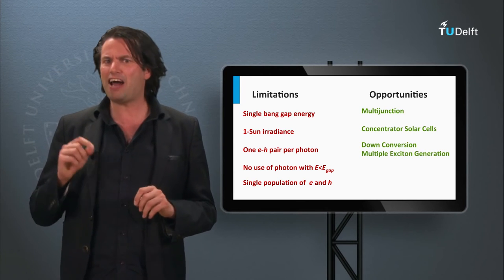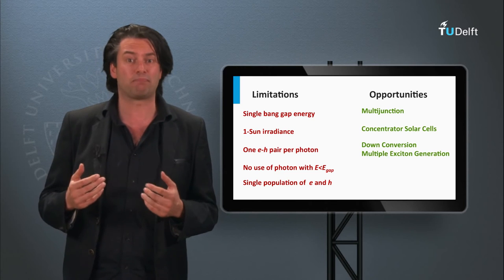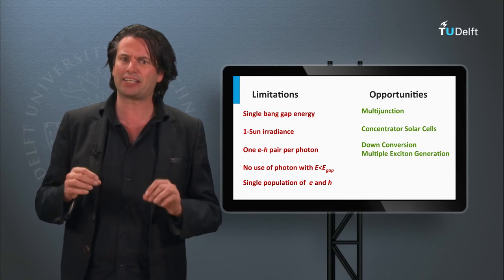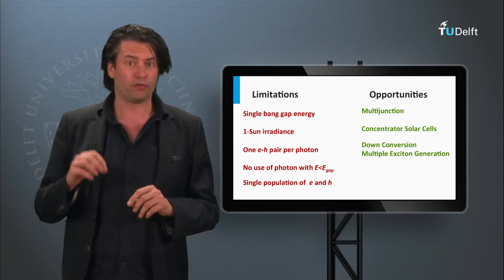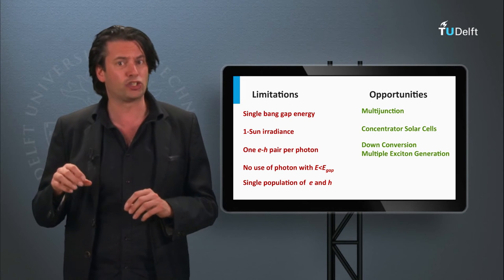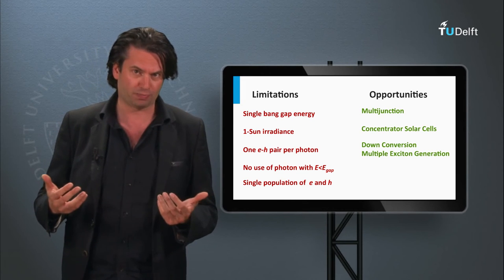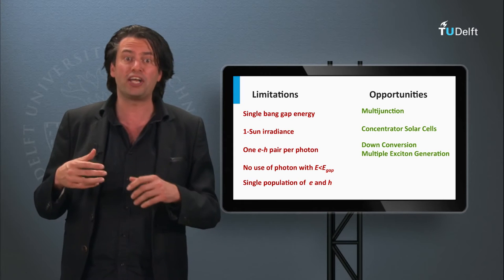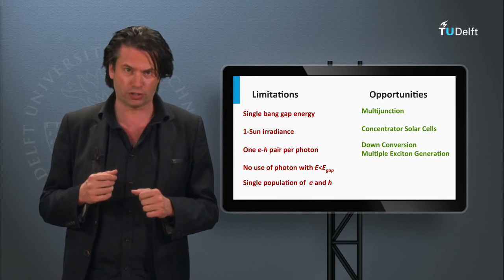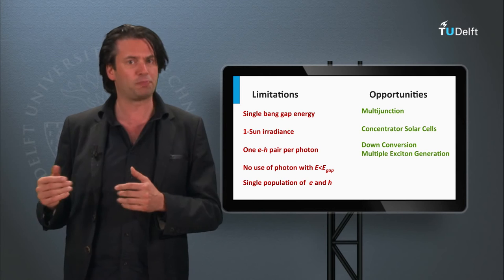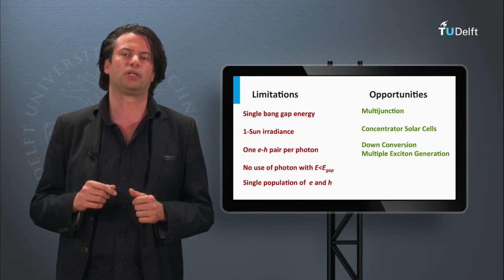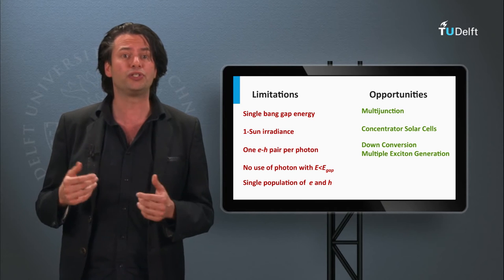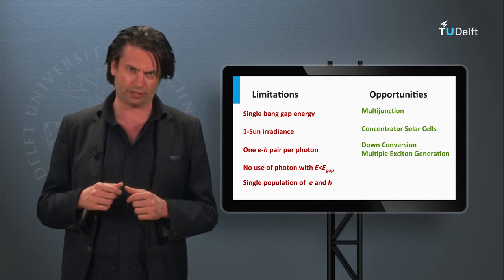The fact that every photon can only generate at maximum one collected electron can in theory be tackled by two approaches. The first one is down-conversion, which is a spectral conversion approach. The high-energetic photons are split into two or even more low-energetic photons before being absorbed in the PV active part. As a result, high-energetic photons can result in more than one electron being collected.